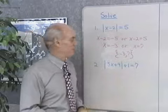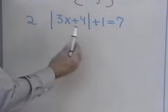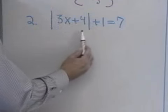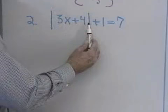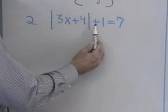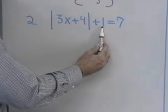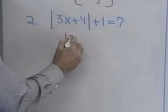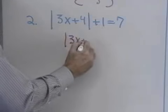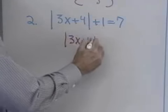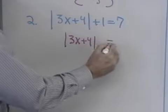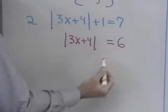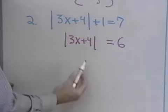Let's look at our next example. Before I solve this equation, I need to isolate this absolute value on one side of the equation. So I'll begin by adding negative 1 to both sides. That will give me the absolute value of 3x plus 4 is equal to 7 plus negative 1, which is 6.